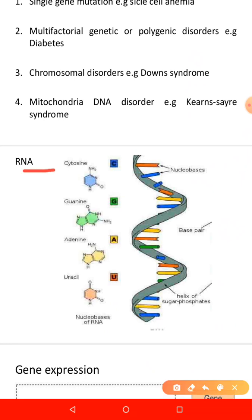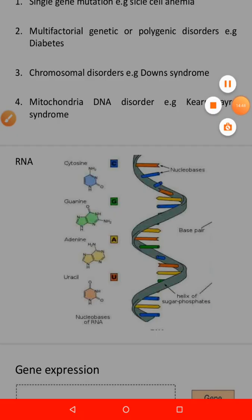When discussing DNA, it is important to mention RNA. RNA contains long chains of nucleotide units. It is similar to DNA but contains ribose instead of deoxyribose. Types of RNA include messenger RNA, transfer RNA, and ribosomal RNA.